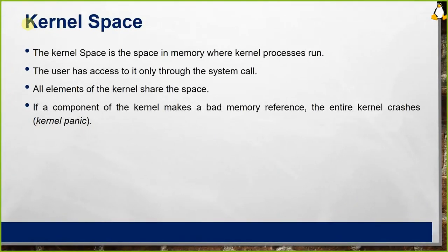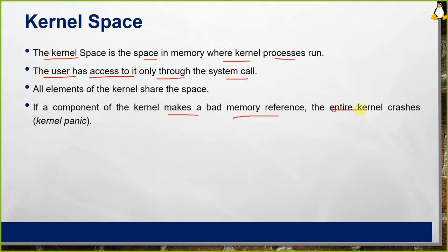The kernel space is the space in memory where kernel processes run. The user has access to it only through system calls. All elements of the kernel share this space. If a component of the kernel makes a bad memory reference, the entire kernel crashes — we call it kernel panic.